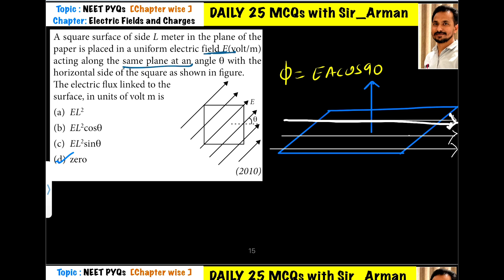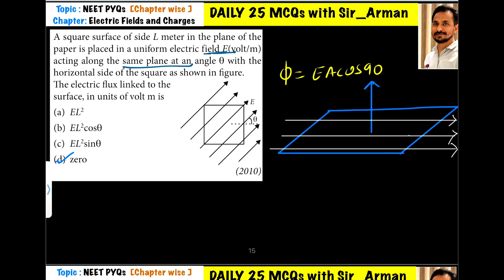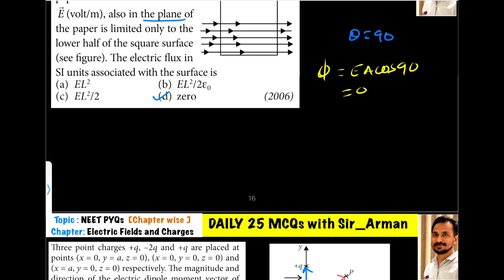Whenever the electric field is acting along the plane, the angle between the area vector and the electric field is 90°, and hence the net flux is 0, because E·A·cos90° — cos90° is 0.